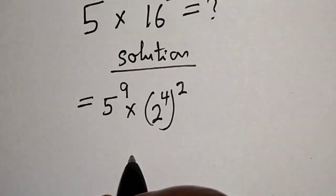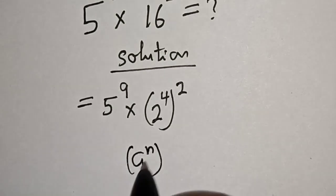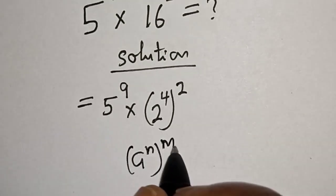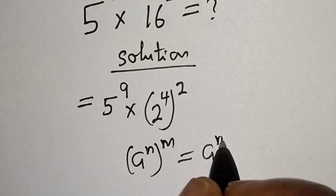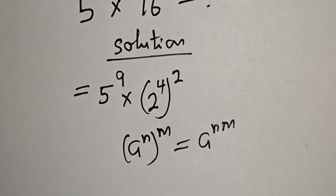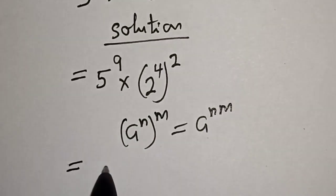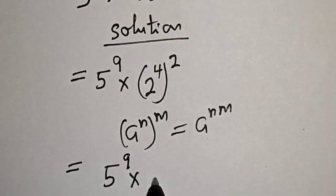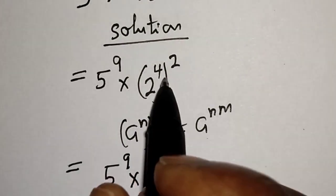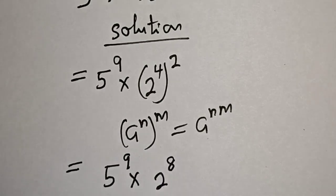The exponential rule states that a raised to power n, raised to power m, is equal to a raised to power n times m. So this becomes 5 raised to power 9 multiplied by 2 raised to power 4 times 2, which is 2 raised to power 8.